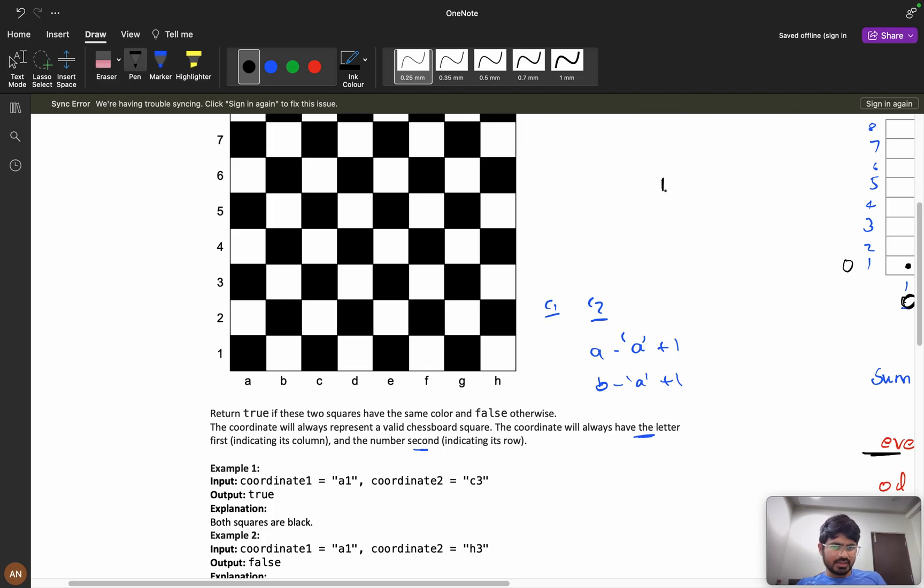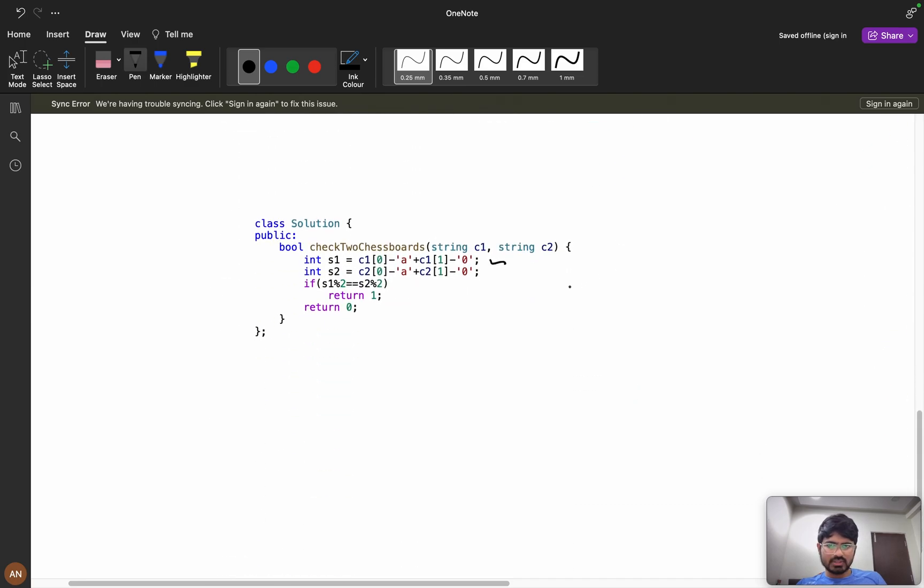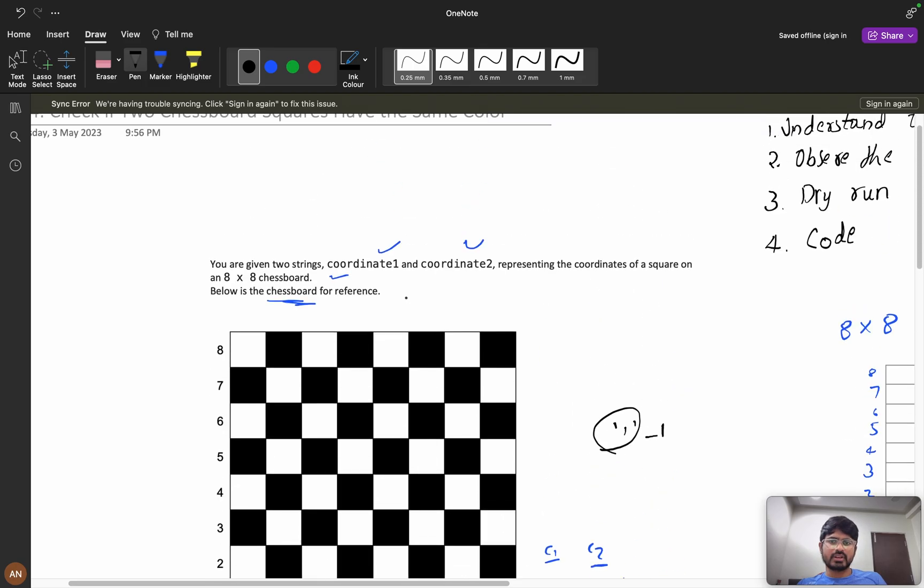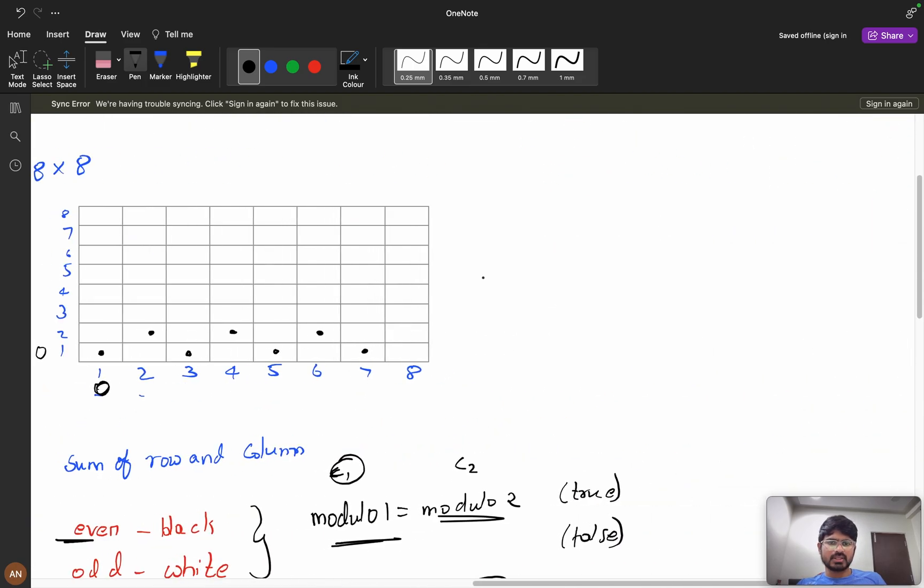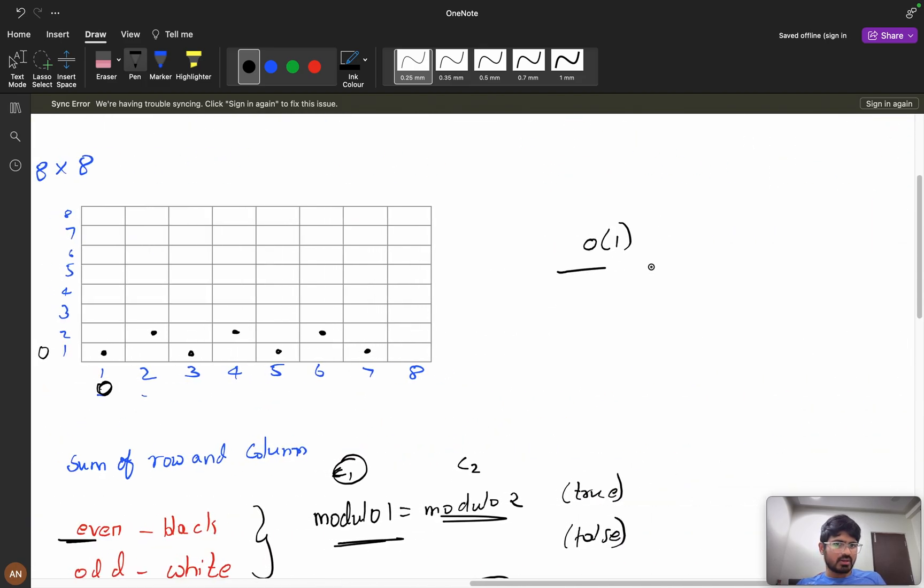If both percentiles are equal, we will return true, or else we will return false. So here your time complexity will be O(1), and we are not using any extra space, so it's O(1) as well. I hope you have learned something new.